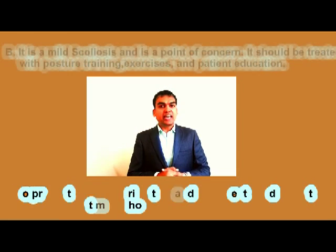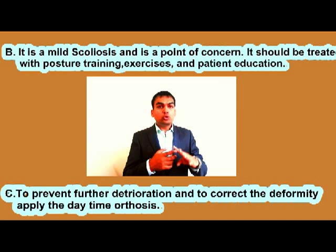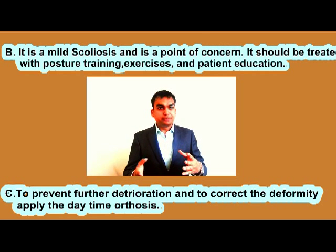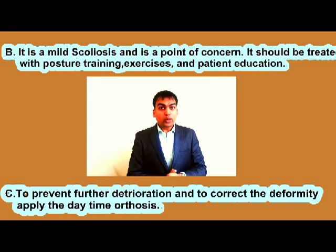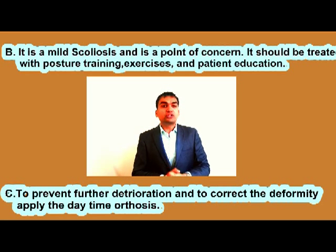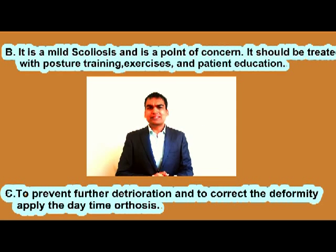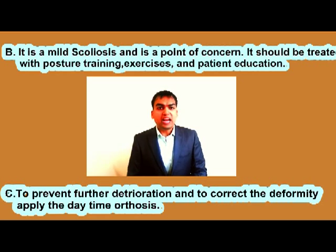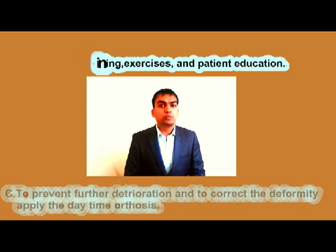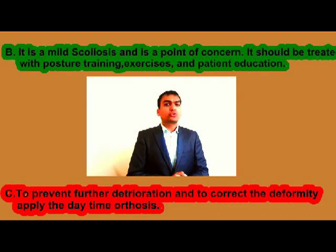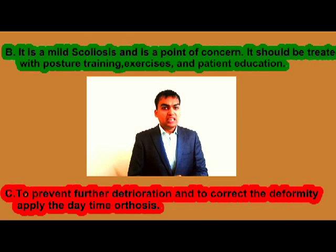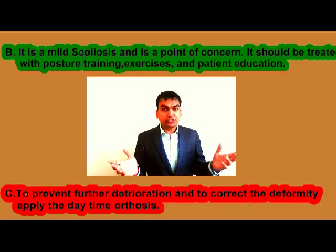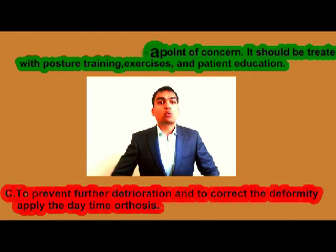Answer B says conservative treatment via postural training and education — that's a conservative approach. Answer C is orthotic management, which may include daytime brace use. According to the basic principle, if the Cobb angle is below 25 degrees, conservative management would be successful, and this case fits that situation. So answer B is the right answer.